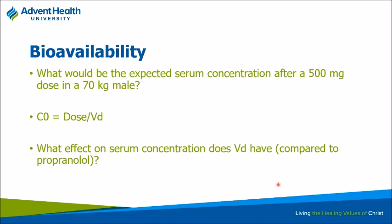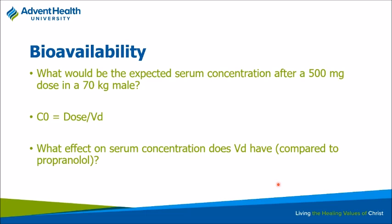This is an example of how giving something like GERD medications that affect pH can significantly affect drug absorption. What would be the expected serum concentration if you gave a 500 mg oral dose to a 70 kg male? Dose is 450 mg (assuming 90% bioavailability). VD is 0.2 L/kg times 70 kg, giving a specific VD of 14 liters. So 450 mg over 14 liters gives a serum concentration of approximately 32 mg/L.